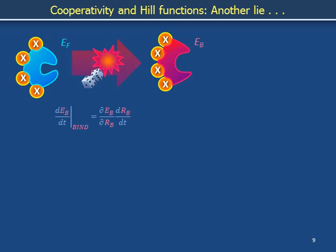The portion of the time rate of change of the bound enzyme population E_b owing to this binding reaction is equal to the product of the rate of change of the number of bound enzymes E_b with respect to the number of binding reactions R_b that have accumulated since some reference time, multiplied by the time rate of binding reactions. For each binding reaction, we increase the number of bound enzymes by one. From the law of mass action, the time rate of binding reactions is a proportionality coefficient K_bind multiplied against four powers of concentration X, corresponding to the four copies of protein X, multiplied against E_f.